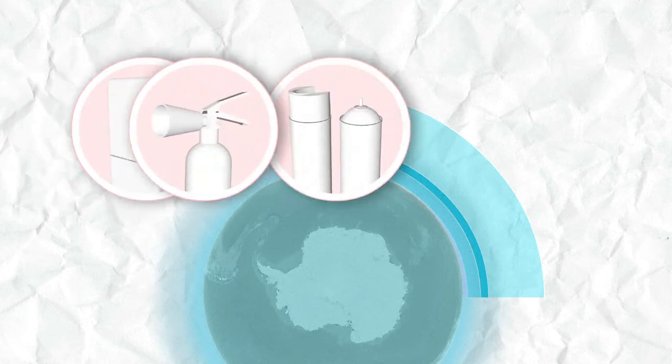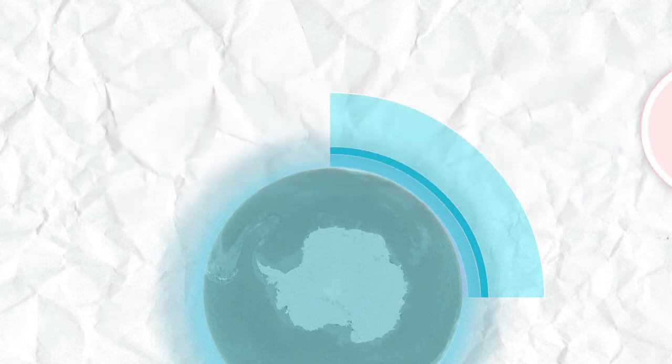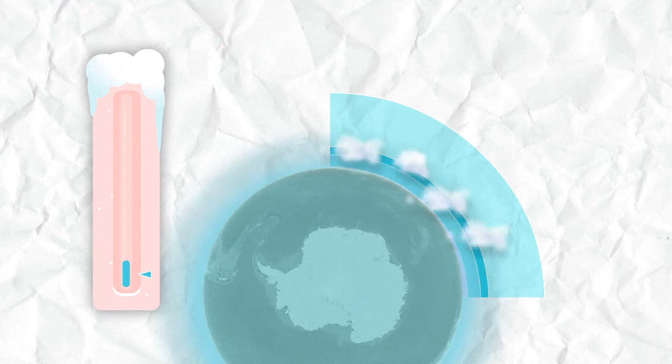This is partly due to the lingering presence of man-made chlorine-based compounds once widely used in refrigerants and consumer aerosols. But most damage is caused by very cold weather, when water vapor and nitric acid molecules condense into clouds in the lower stratosphere. These clouds in turn become a bed where chlorine molecules gobble up ozone.